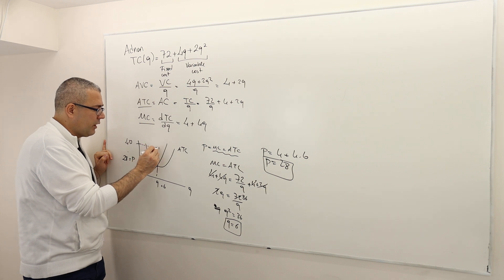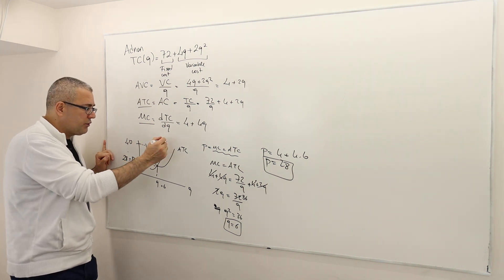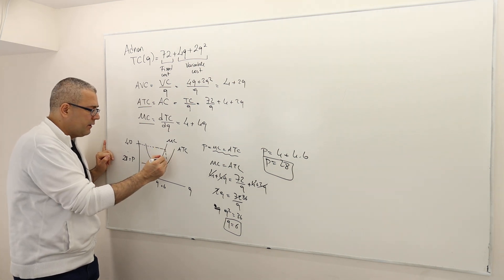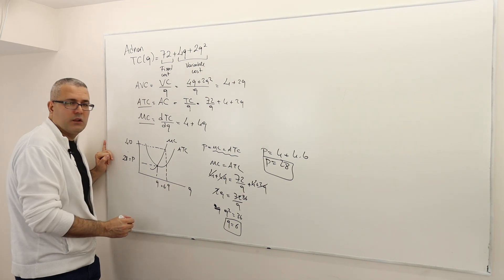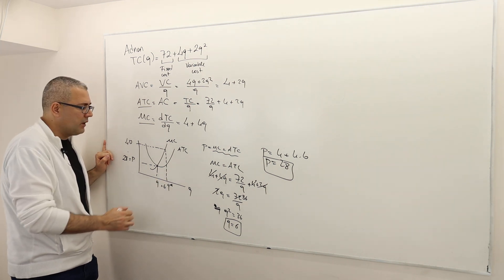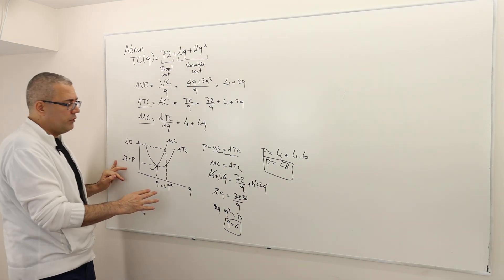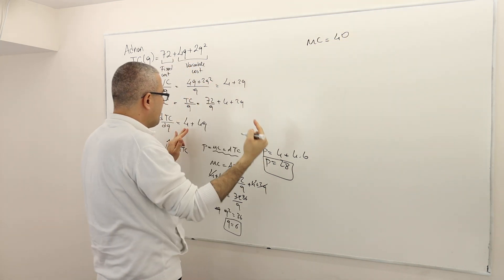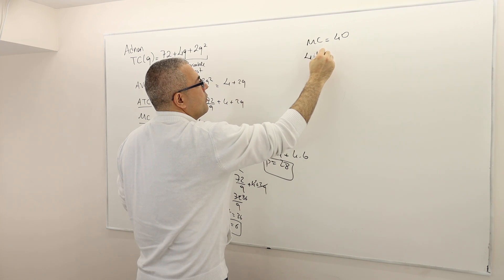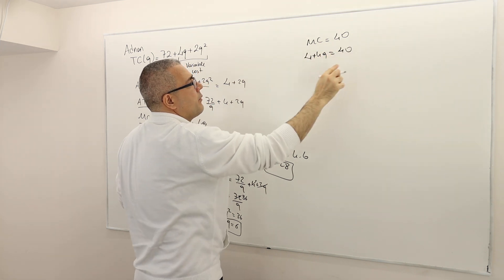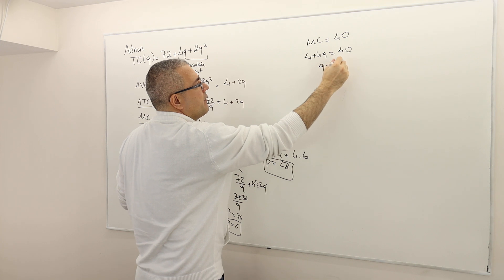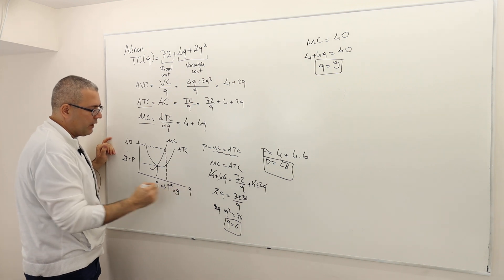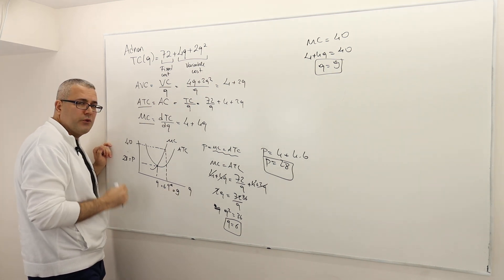The marginal cost curve is the supply curve of a perfectly competitive firm, so the firm produces Q* where price equals marginal cost. With price = $40 and MC = 4 + 4Q, setting them equal: 40 = 4 + 4Q, so Q = 9. Instead of producing 6 units, Adnan will now produce 9 units.